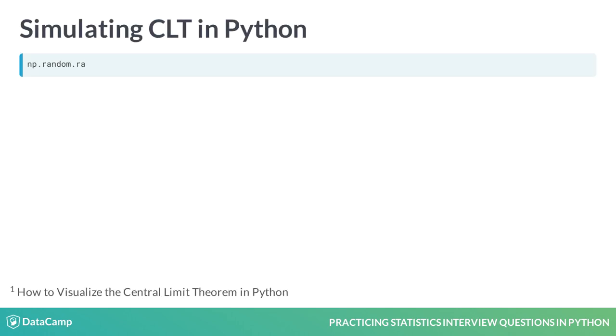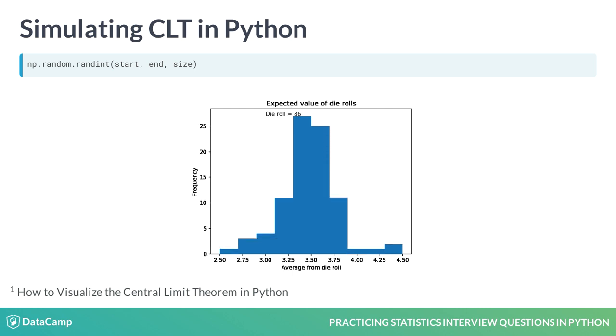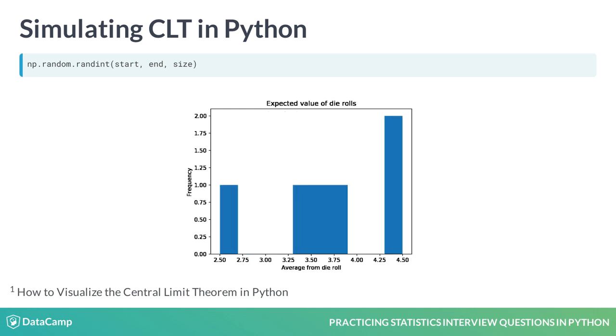We can run a simulation in Python to get the following plot showing rolls of a normal six-sided die. In order to do this, we'll utilize the numpy randint function, where we input the start, end, and number of values that we want to randomly generate, along with the numpy mean function.